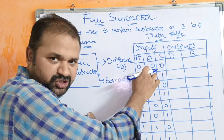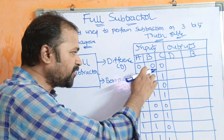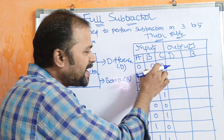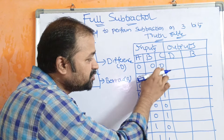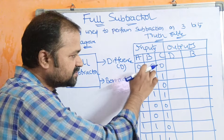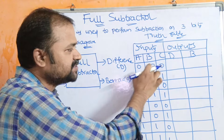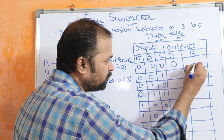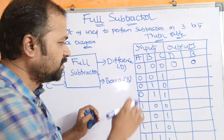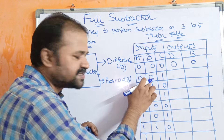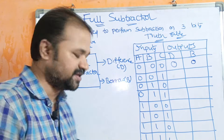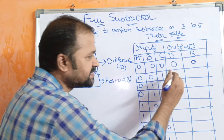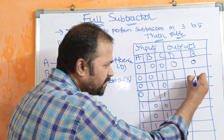For the first combination (0,0,0): 0 minus 0 is 0, so difference is 0, borrow is 0. Then we subtract the C bit 0 from the difference: 0 minus 0 is 0, so difference is 0, borrow is 0. For the next combination, 0 minus 1 gives difference 1 and borrow 1.